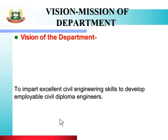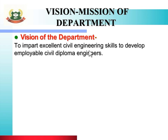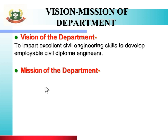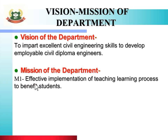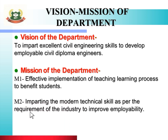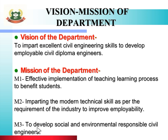First, let us look at the vision and mission of the department. Vision: To impart excellent civil engineering skills to develop employable civil diploma engineers. There are three missions: Mission one is effective implementation of the teaching-learning process to benefit students. Mission two is imparting modern technical skills as per industry requirements to improve employability. Mission three is to develop socially and environmentally responsible civil engineers.